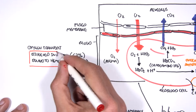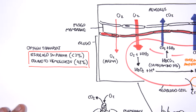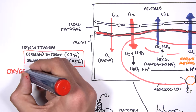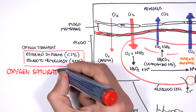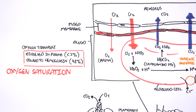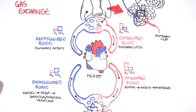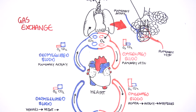This brings us to the last concept: oxygen saturation. Oxygen saturation refers to the concentration of oxygen in the blood, and normal blood oxygen levels should be at least 95% to 100%. Thank you for watching. I hope you enjoyed this video on gas exchange. The next video will look at control of respiration.